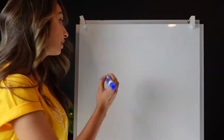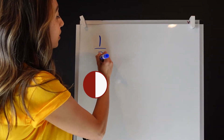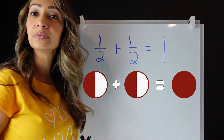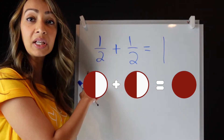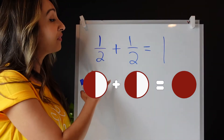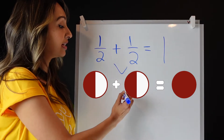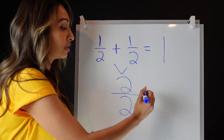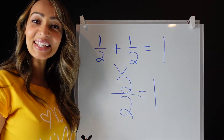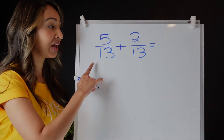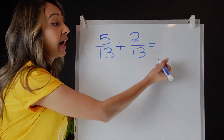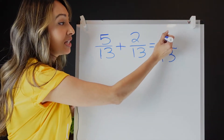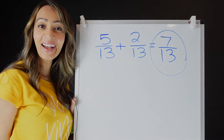Let's revisit that fraction. One half plus one half is one whole, and that's because they have like denominators — like as in the same. So when you have like denominators, all you have to do is keep your denominator the same and add the tops together. I know two goes into two one whole time. Let's try another one: if I have like denominators, I just keep my denominator the same and add my numerators. 5 plus 2 is 7. That's easy!